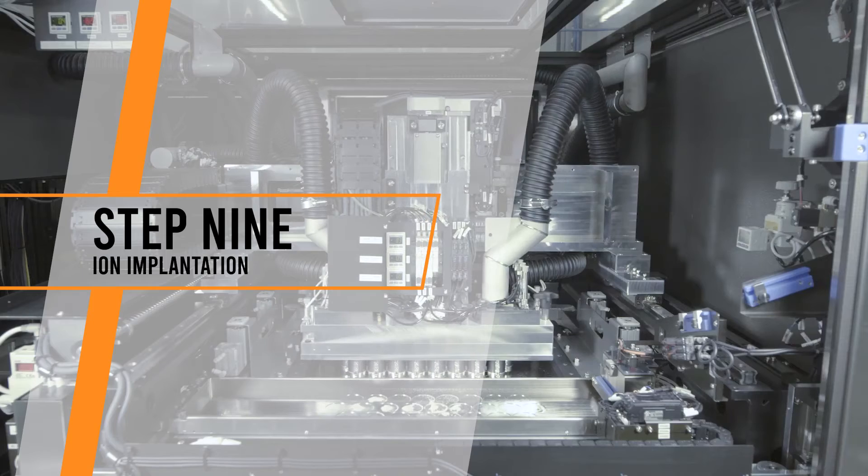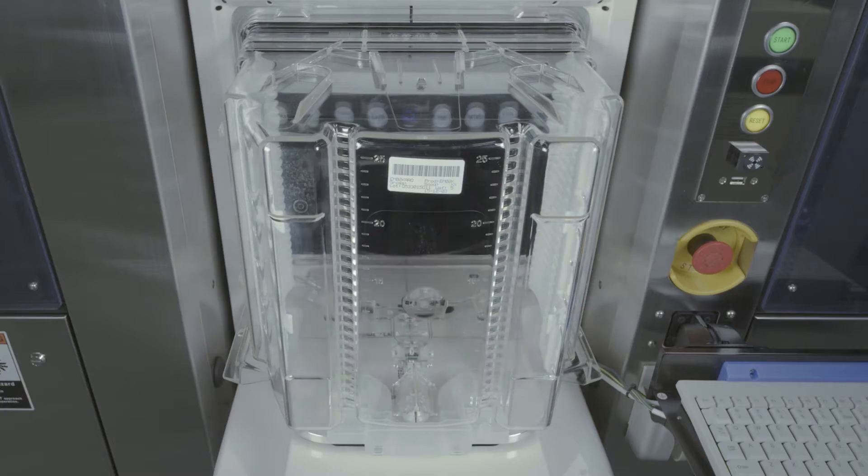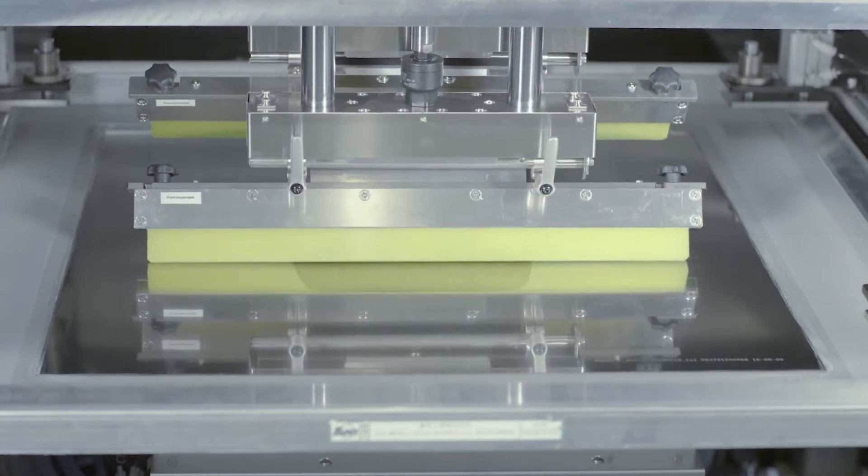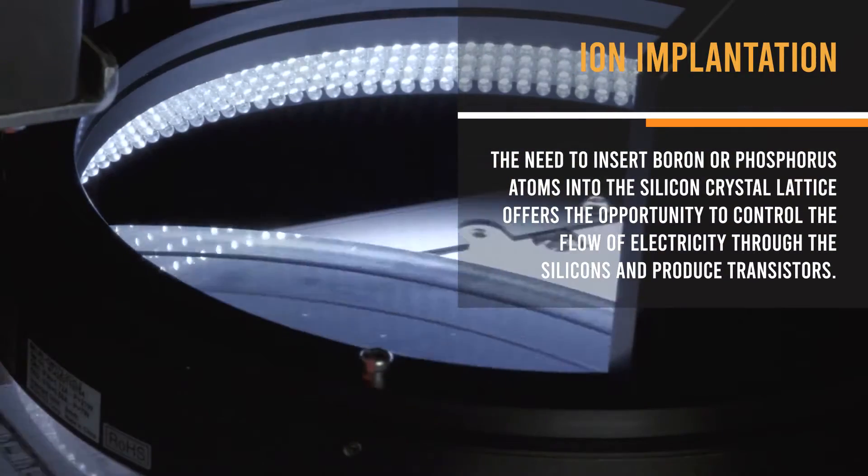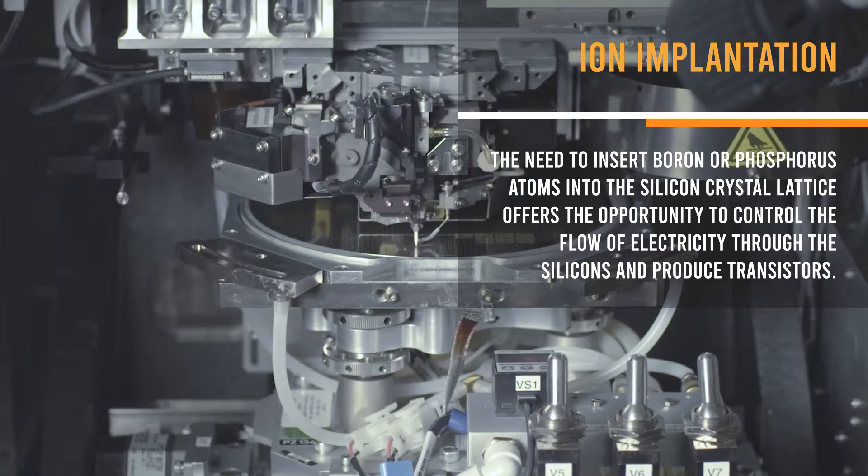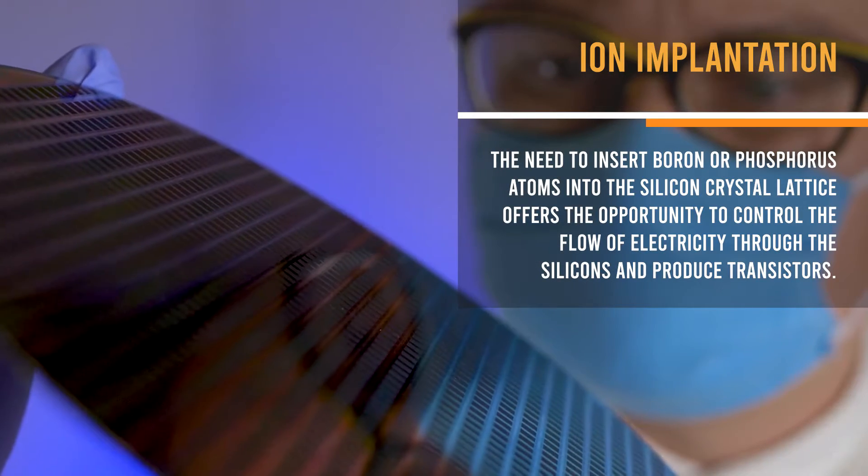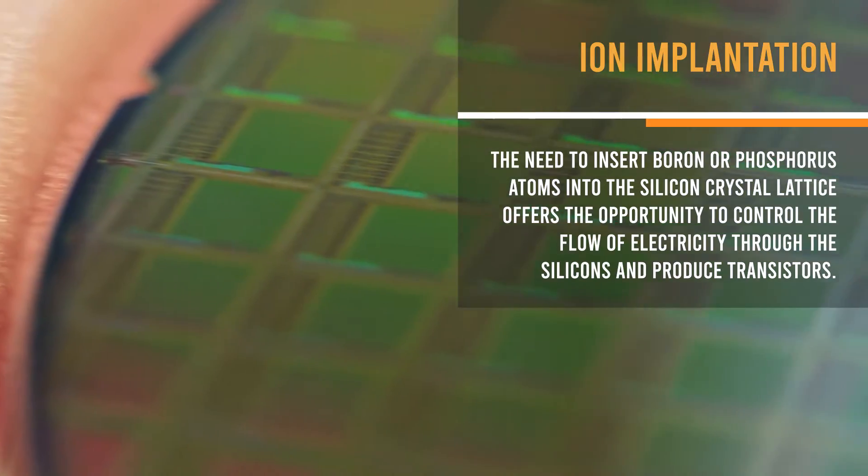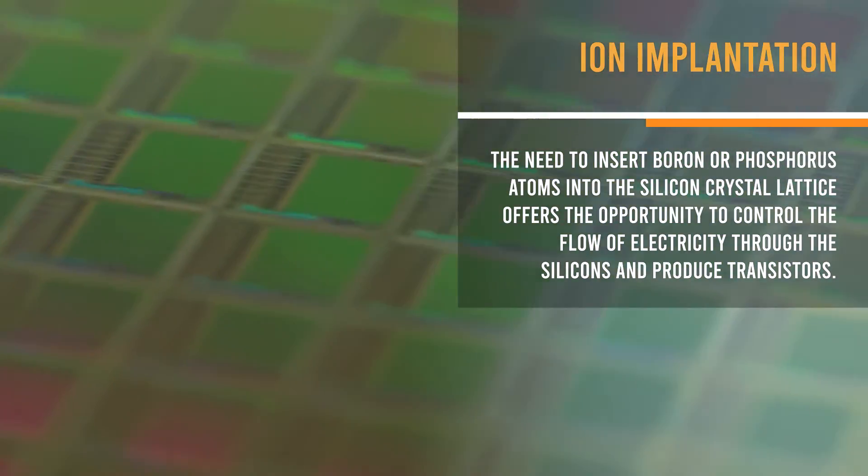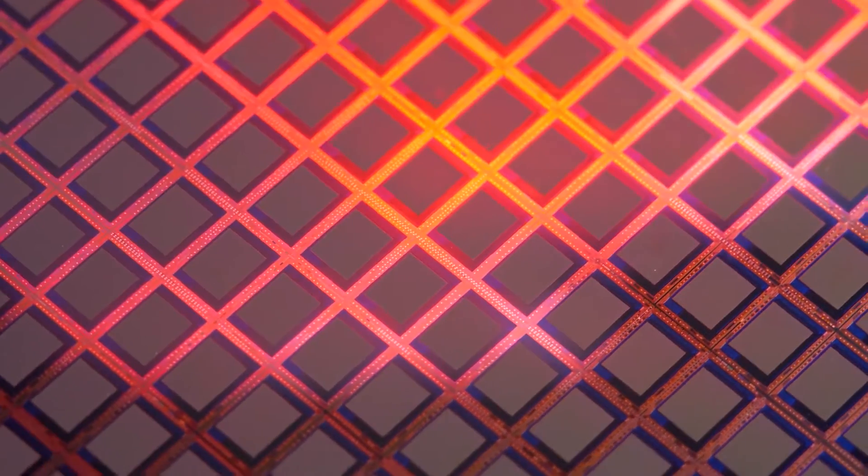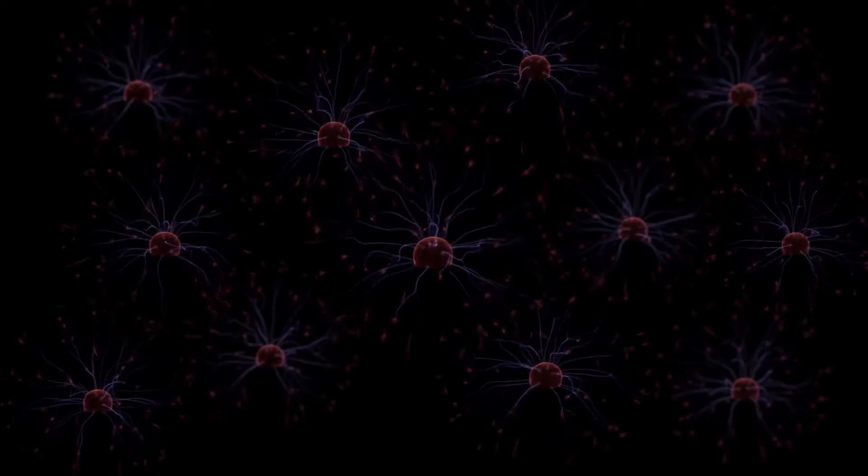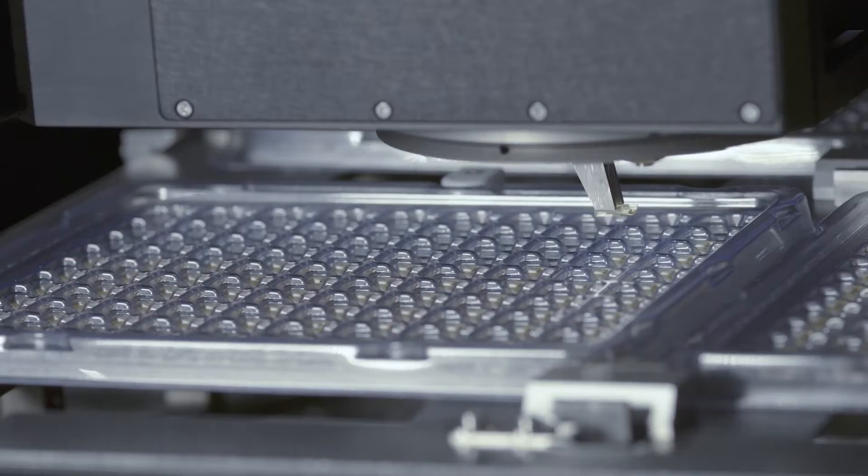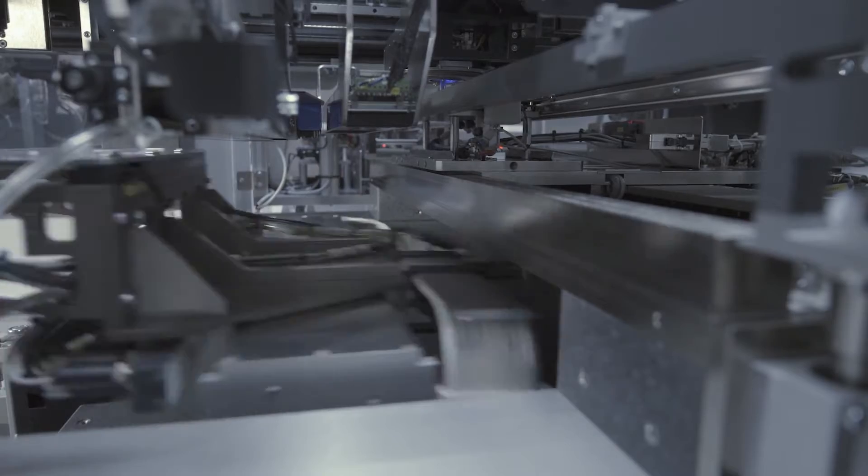Step 9. Ion implantation. This is another important process in microchip manufacturing. Silicon, which is the major material used in this process, is neither a good insulator nor a good conductor. The need to insert boron or phosphorus atoms into the silicon crystal lattice offers the opportunity to control the flow of electricity through the silicons and produce transistors. For a clear understanding, you can simply say, ion implantation is the process of bombarding the wafer with positive and negative ions to tune the semiconductor properties of parts of the pattern before removing the remaining photoresist.